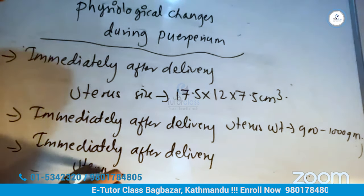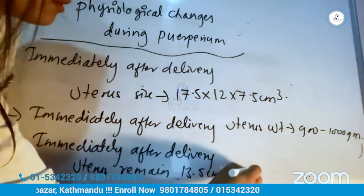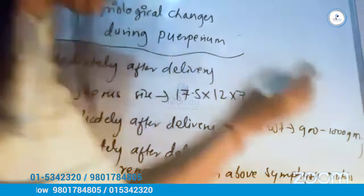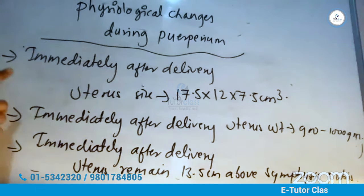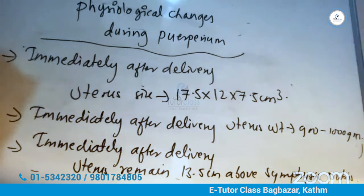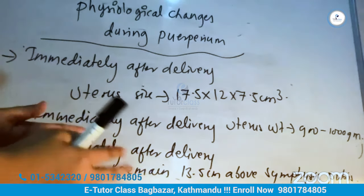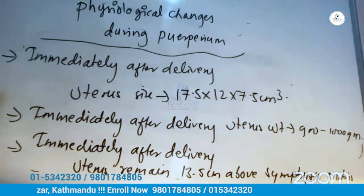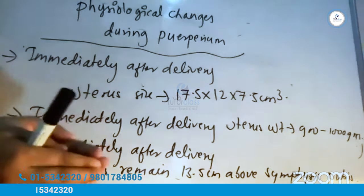Immediately after delivery, the uterus remains 13.5 centimeters above the symphysis pubis. The uterine dimensions are 17.5 by 12 by 7.5 centimeters.